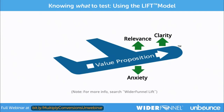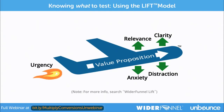Then there are some factors that reduce conversion rate. Anxiety is anything on the page that creates uncertainty in the prospect's mind about taking action. Distraction is one of the most important factors we find — marketers who are terrified of leaving something out end up with bloated pages, trying to appeal to every persona, which just creates confusion. There's often a tension between clarity and distraction. And the final factor is urgency — you can test urgency with offers and with the tone of your copy.